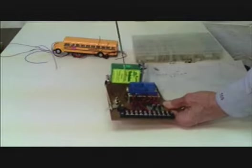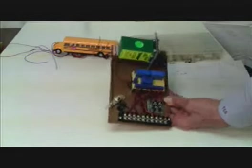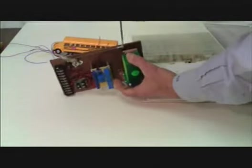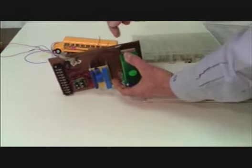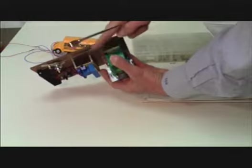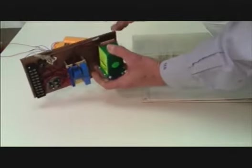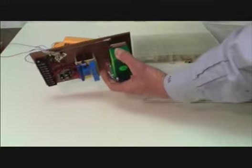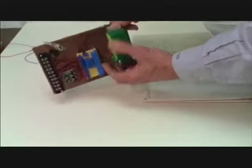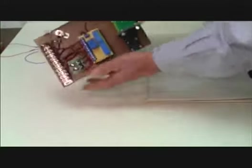What I decided to do is use a Circuitron tortoise slow motion switch machine. The way these work is if you give them positive negative one way and hold it, this little arm goes one way. If you reverse that polarity, the arm is going to come back, and it will hold that way, and it will work real nice, nice and slow.